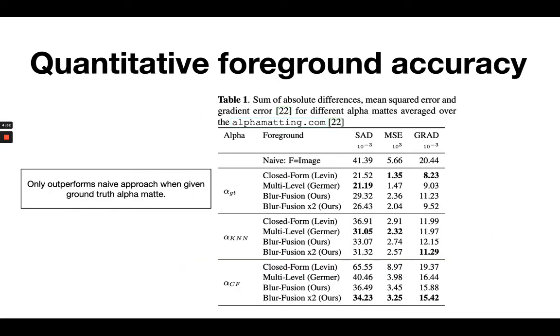Well, we can look at the quantitative foreground accuracy in terms of mean squared error and some other metrics. And we can see that when we are given a ground truth alpha that's completely perfect, the other methods actually perform quite better than ours, but ours will still vastly outperform the baseline.